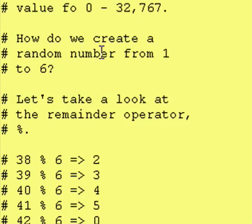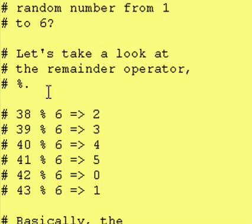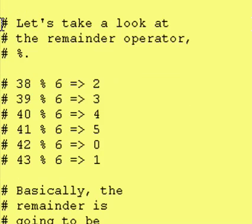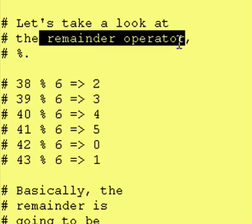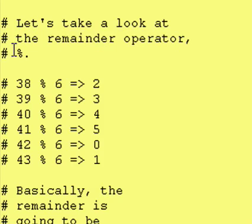How do we create a random number from one to six? We are going to look at the corn shell math operator called the remainder operator. It is a percent sign. And what it does is when you divide a number by another number, it gives you the remainder left over, not the quotient, not the answer.